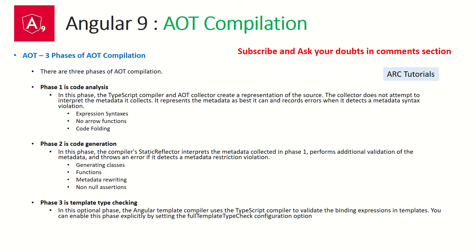In Phase 2, it generates code — it converts TypeScript into ES6. The first phase uses the TypeScript compiler to analyze the code and build a collector. The second phase converts the TypeScript code into ES6, and this is where you start seeing errors — for example, errors in generating a class, a mistake in a function, metadata rewriting errors, non-null assertion errors. If it's not able to convert some code from TypeScript to JavaScript, it will report errors here.